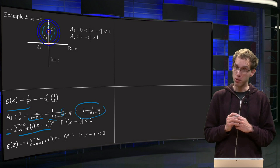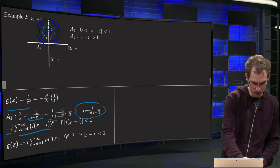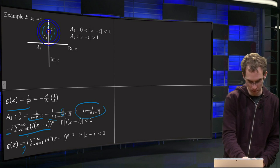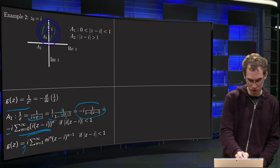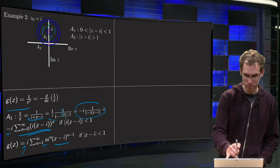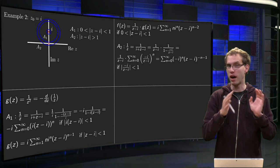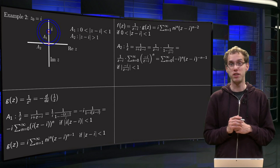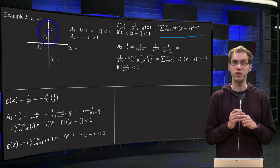We compute g(z) by differentiating — the minus signs cancel, differentiating the (z−i)ⁿ term yields n(z−i)^(n−1), keeping the iⁿ factor. So there we have g(z) = 1/z². Then f(z) is obtained by multiplying g(z) by 1/(z − i), which is already in the appropriate form — and there we have our Laurent expansion in the first annulus around i.